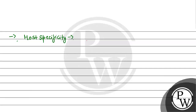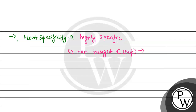What is host specificity? Our NPV is highly specific for caterpillars or lepidopteran pests. It is highly specific, and non-target species — let's say crops — remain safe. It does no harm to them.